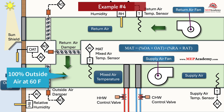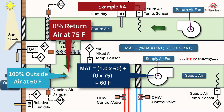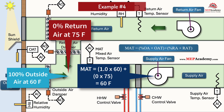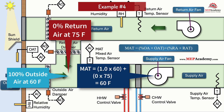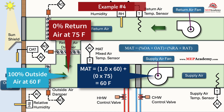Example 4 — 100% outside air, economizer mode: Outside air = 60°F. This is where the economizer high limit strategy will come into consideration. See our next video on economizer control high limit strategies.